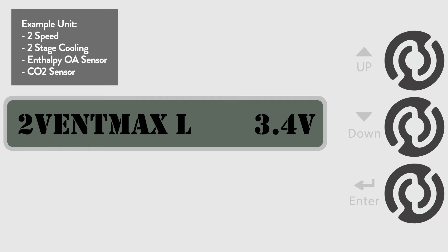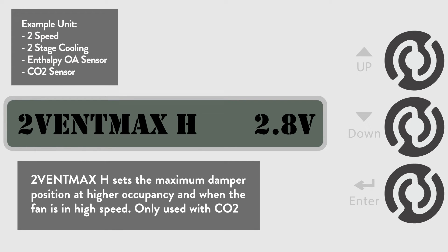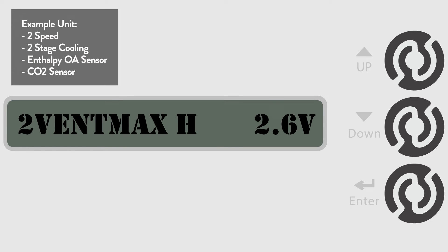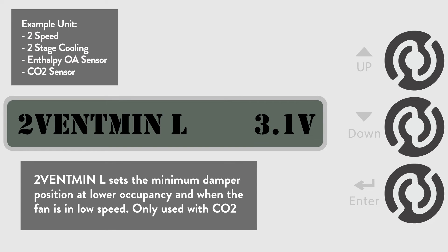Go to the 2 Vent Max H menu to set the CO2 sensor's maximum non-free cooling position when the unit is in high speed. The default is 2.8 volts, but we are going to change that to 2.6 volts. Now we will set the minimum outside air position when using a CO2 sensor. This would typically be for spaces with lower occupancy levels. Go to the 2 Vent Min L menu to set the CO2 sensor's minimum non-free cooling position when the unit is in low speed. The default is 3.1 volts, but we are going to change that to 2.9 volts.